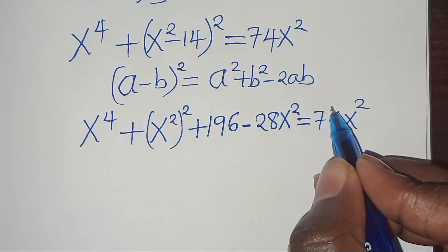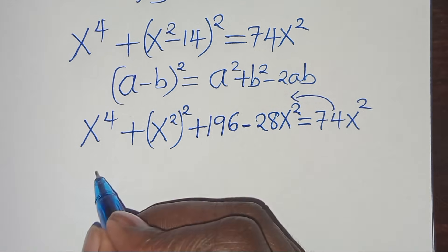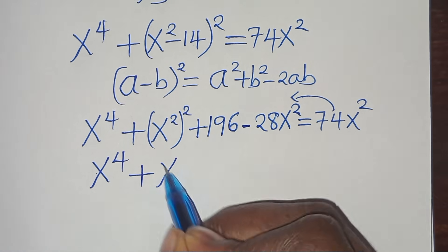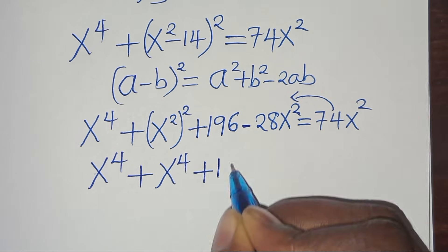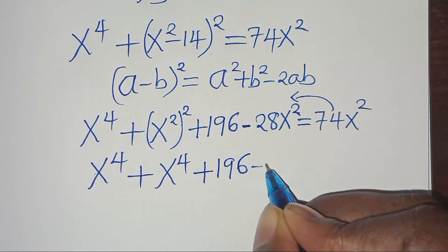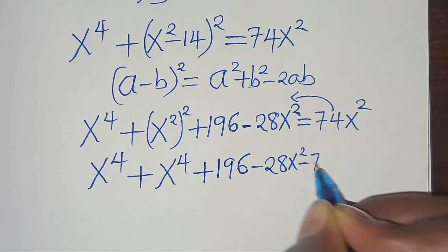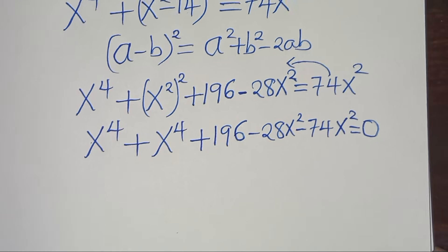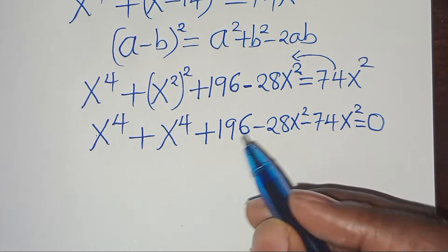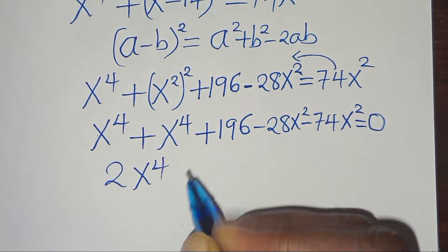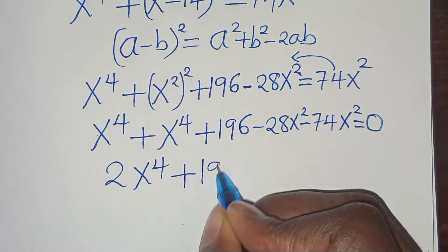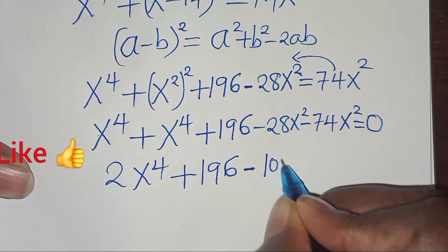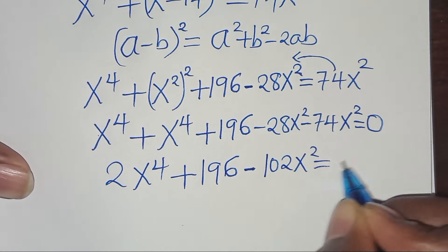Now let's take 74x squared to the left-hand side. So we have x to the power of 4 plus x to the power of 4 plus 196 minus 28x squared minus 74x squared equals 0. Combining like terms: 2x to the power of 4 plus 196 minus 102x squared equals 0.